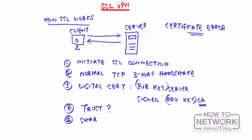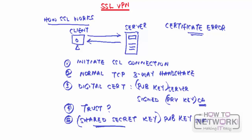Once the certificate is accepted, the client generates a shared secret key that will be used for encryption between the client and the server. The client encrypts this shared secret key with the public key of the server, then sends that encrypted message to the server. Only the server's private key can decrypt a message encrypted with its public key. Now both have the same shared secret key for communication - notice that only the server needs a digital certificate, not the client.